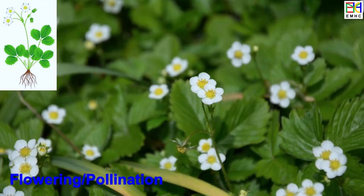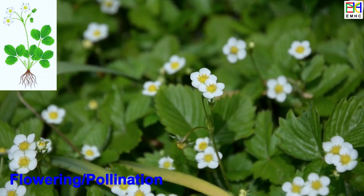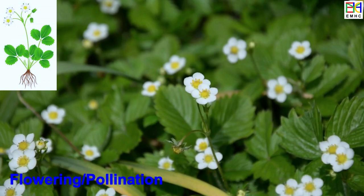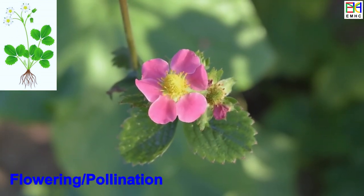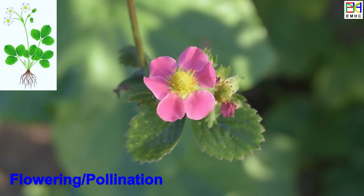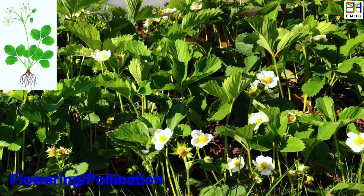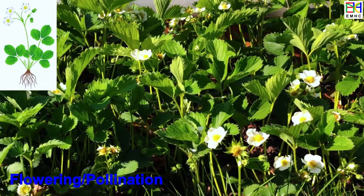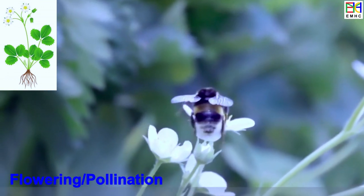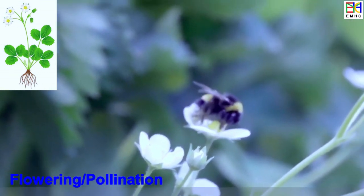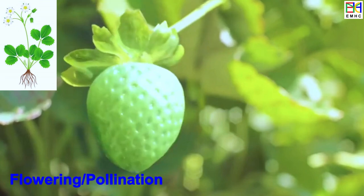Once the strawberry plant has reached a certain size, it enters the flowering stage and starts to produce flowers. This stage is a critical period to determine the potential for fruit production. The flowers are usually white or pink, have five petals, and are located on the ends of the stems. The flower center contains both male and female reproductive organs. Pollination occurs when pollen from the male reproductive organ called stamen is transferred to the female reproductive organ called pistil, either by wind or by insects such as bees, butterflies, or other insects. Once pollination occurs, the fertilized flowers start to develop into fruit.